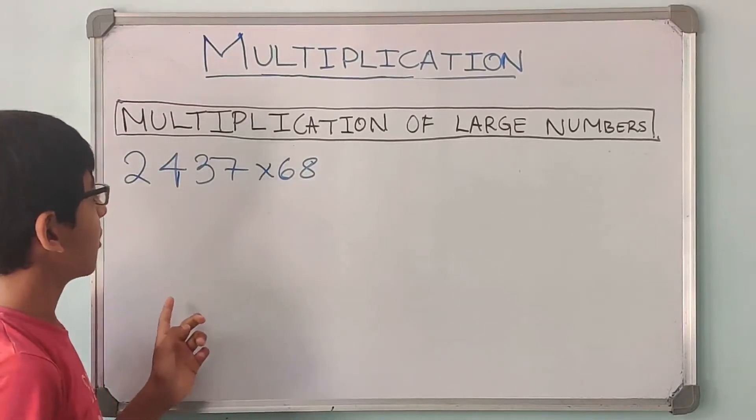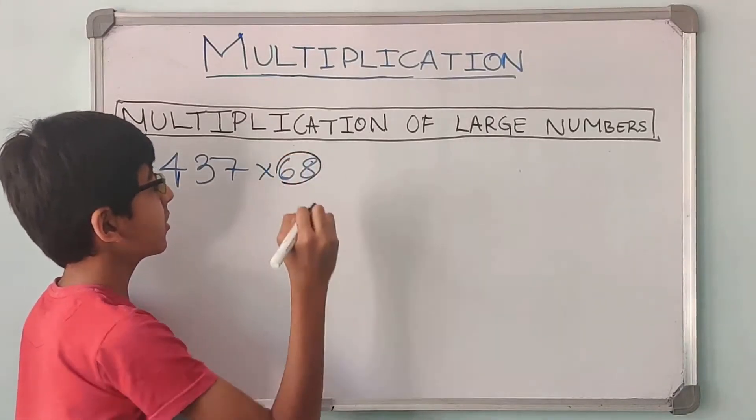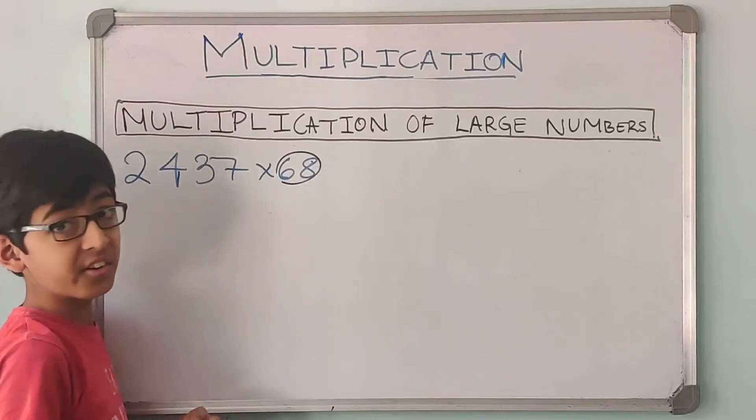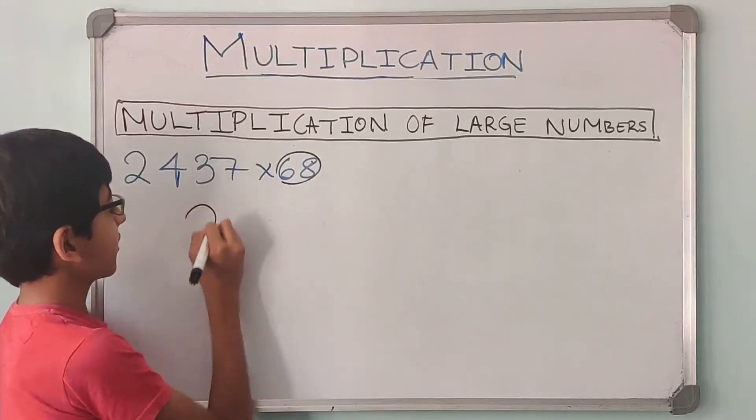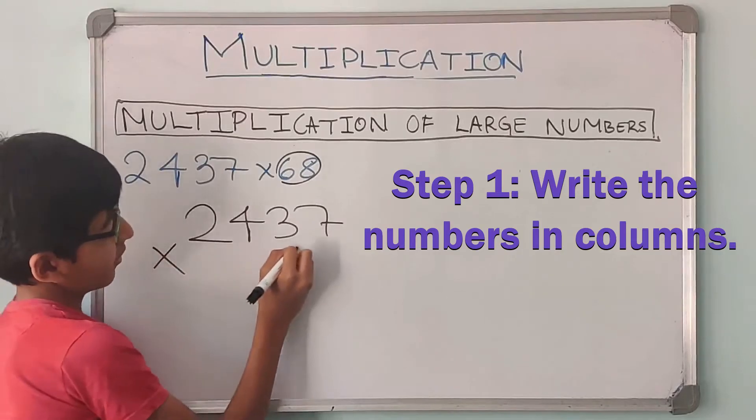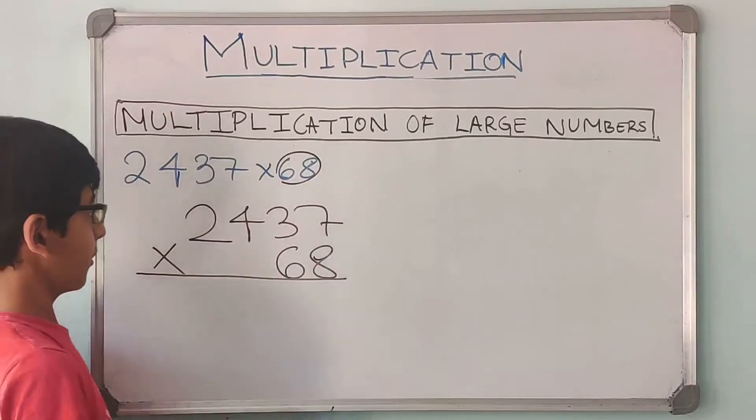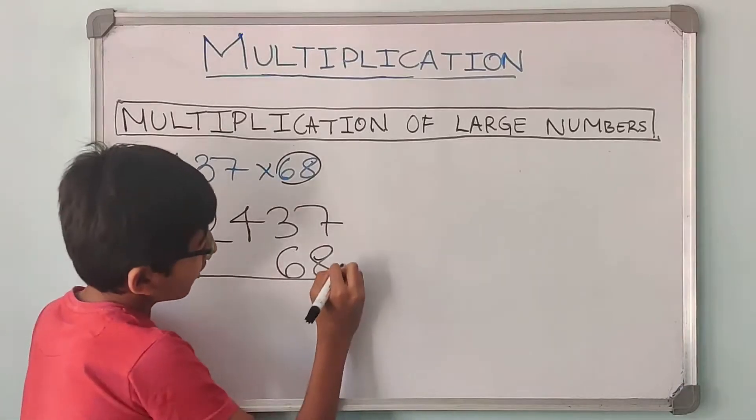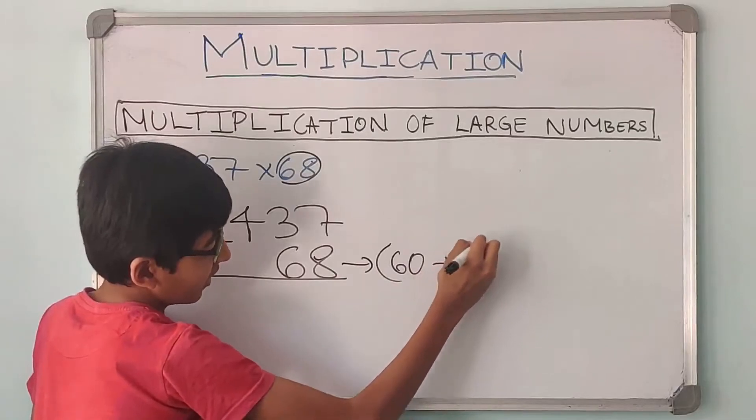Now let us solve the second question where the multiplier is 2 digits. So 2,437 into 68. How do we solve this? First step is the same. Write the numbers like this in columns. Now write the 6 over here and 8 over here. So this was the first step, to write them in columns.